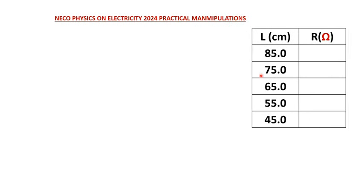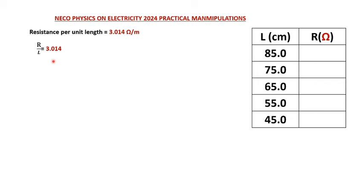We have the length of the wire, and I'm going to determine the resistance of the wire using the resistance per unit length determined at the beginning. The resistance per unit length is 3.014 ohms per meter, so R/l = 3.014, which gives R = 3.014l. Since the lengths are in centimeters and the unit is ohms per meter, I divide by 100, giving R = 0.03014l. I then plug the values of l into this equation to obtain the resistance of the wire at each given length.